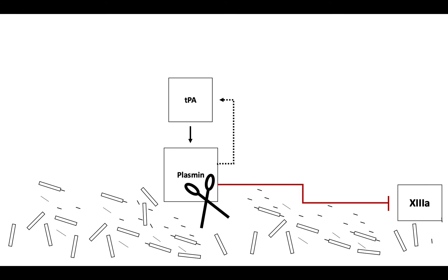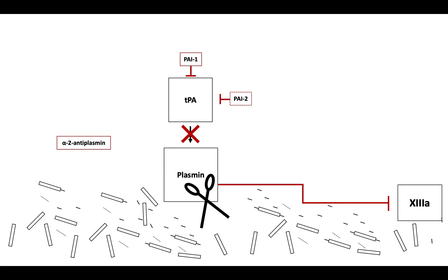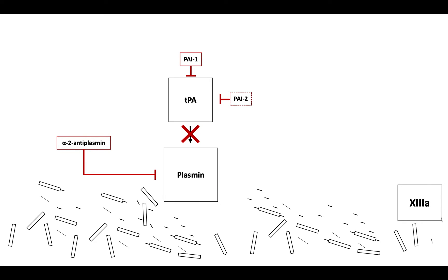Plasmin activity is regulated by plasminogen activator inhibitor 1, also known as PAI-1. PAI-1 works with PAI-2 to inhibit tissue-type plasminogen activator's conversion of plasminogen to plasmin. Another regulator of plasmin is alpha-2-antiplasmin, which inhibits plasmin by complexing to thrombi and making them resistant to plasmin. Once plasmin is inhibited, it stops cleaving fibrin and factor 13.